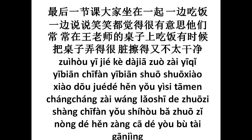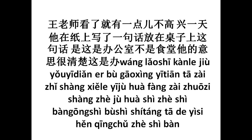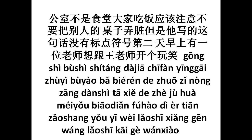You shri hou pa chuo zhe — at times on the table — nong de han zang sa de yu thai, yu pu thai kan ching. So at times some food fell on the table and it was not very clean. Wang lao shri khan la chiu yu yi tiar pu kao shing — teacher Wang was not happy. Yi thian tha zai chhe shang shie la — so one day he wrote on a paper. Yi chuhua fang zai chuo zhe shang — so one day he wrote something on paper and put it on the table. Shri chuhua pan kong shra pu sh shri thang — this is office and not canteen. Tha da yi si han ching chuo — his meaning was very clear.